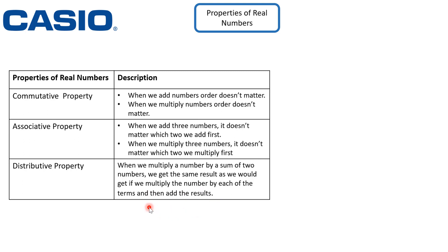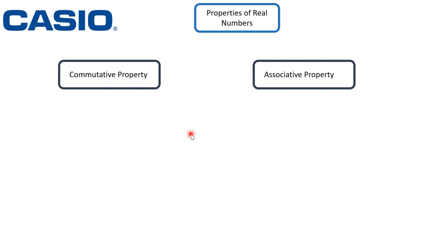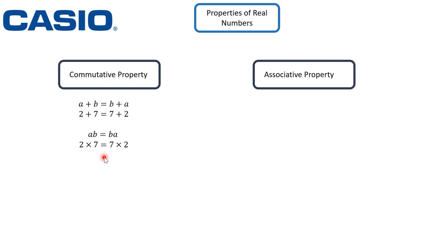Commutative property in detail: if you are adding two numbers, a plus b equals b plus a, since order in addition doesn't matter. For example, two plus seven is the same as seven plus two. This rule also applies in multiplication: a times b is the same as b times a. For example, two times seven is the same as seven times two, because both sides give an answer of 14.